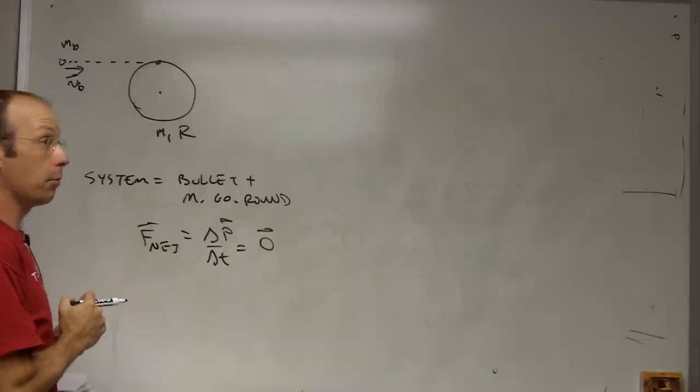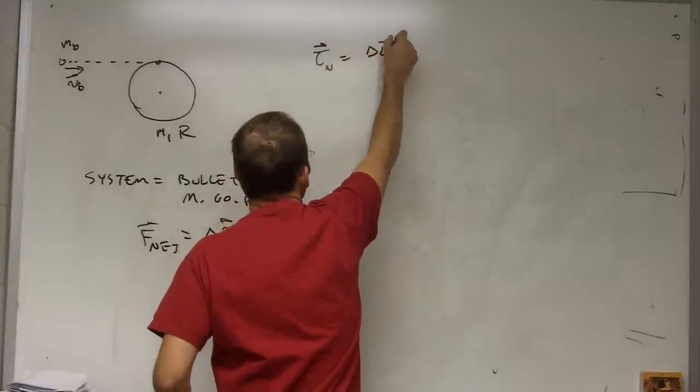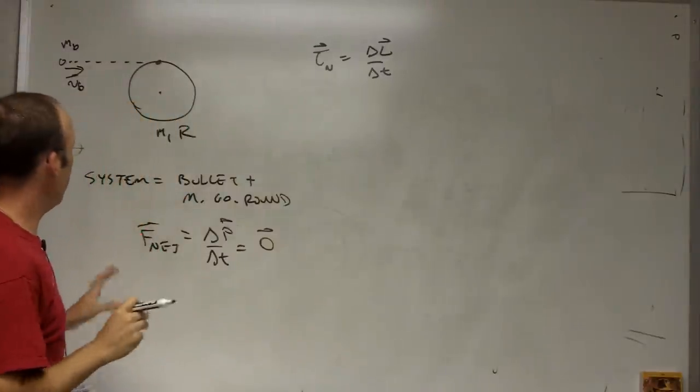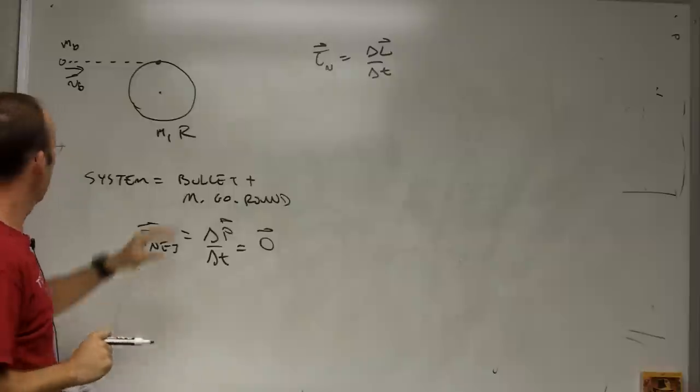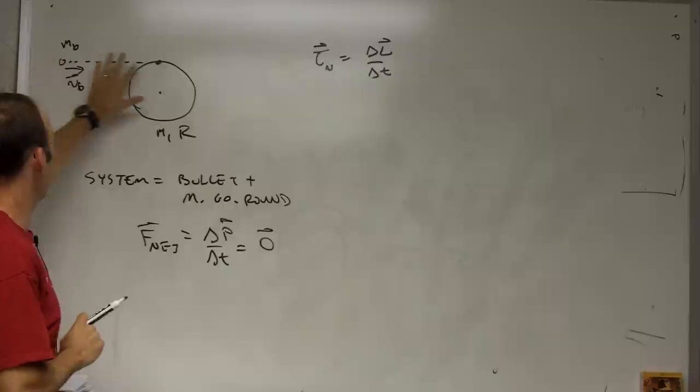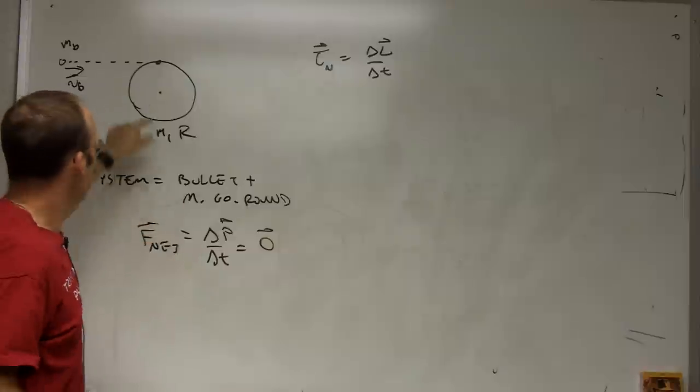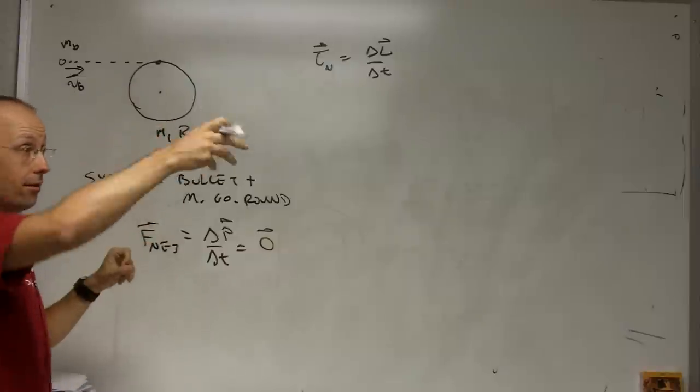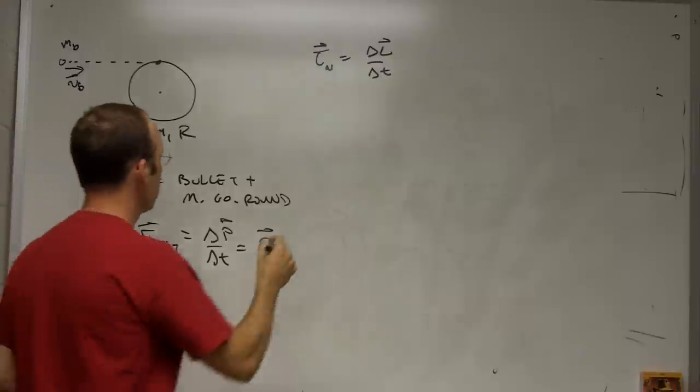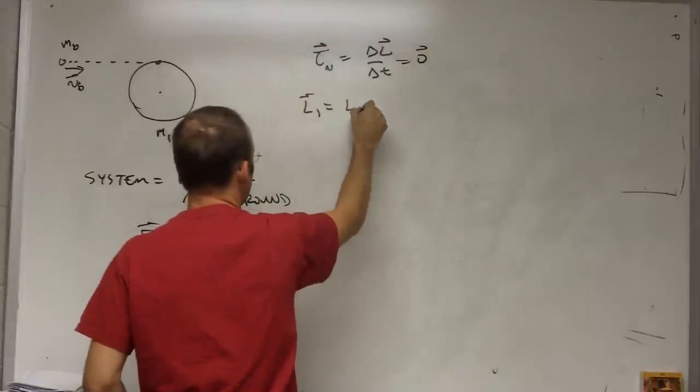But what about angular momentum? Okay. So in this case we take our same system to be the bullet plus the merry-go-round. Then there's no torque on the system. I mean the bullet exerts a torque on the merry-go-round. The merry-go-round exerts a torque on the bullet. But that's inside the system. The axle, if I assume there's no friction, it lets it spin. It doesn't exert any torque. So that means that the change in angular momentum is constant. So I can say this is equal to zero. So L1 equals L2.